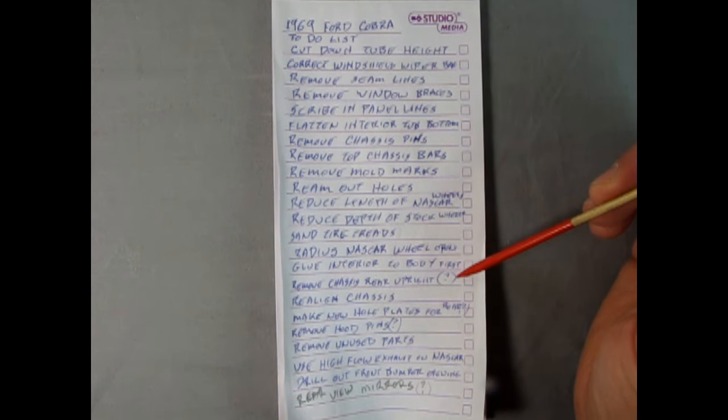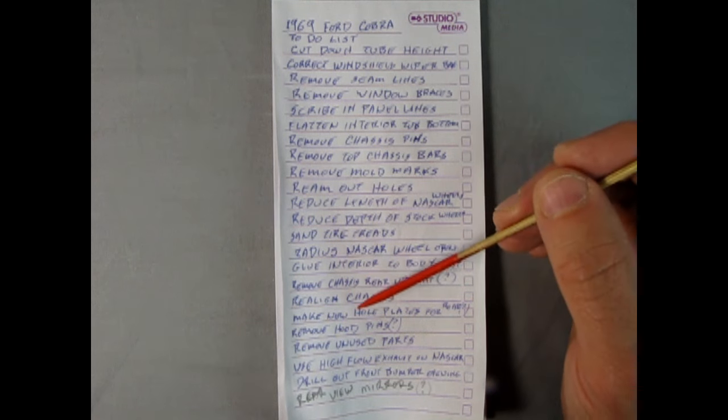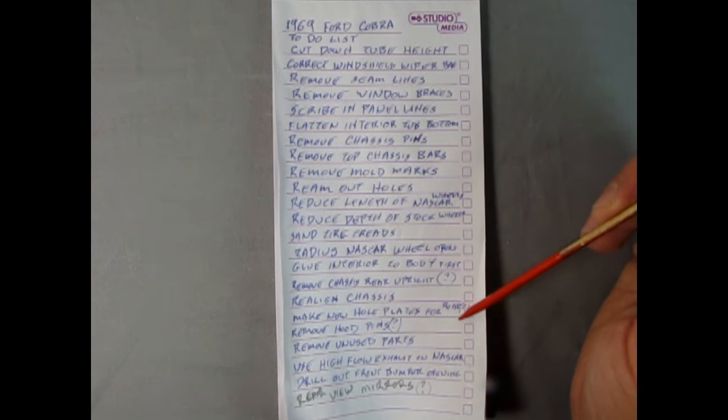Now that was the thing in the back, and I've got a question mark here because I'm not sure if we need to do that or not. But if we do, it's coming off for sure. Realign the chassis. Make new hole plates for the rear end. So this is the thing I wanted to show you.